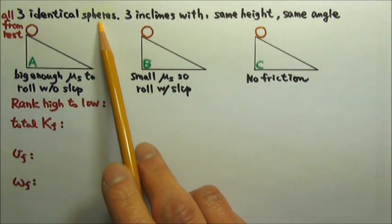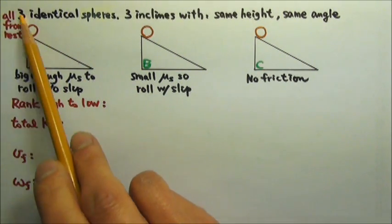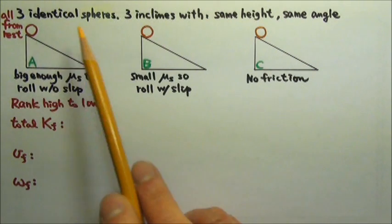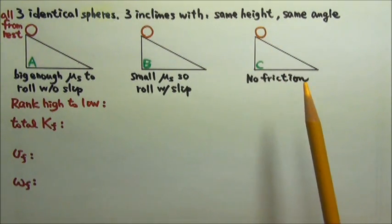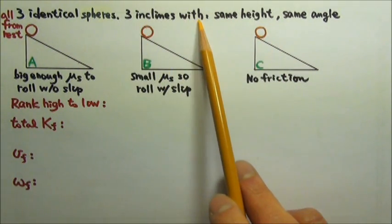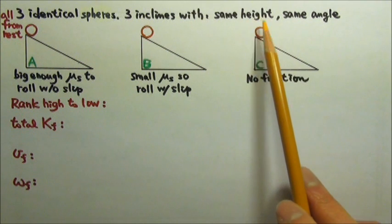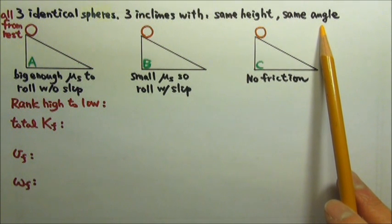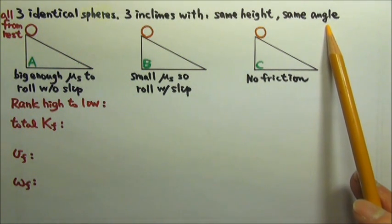Three identical uniform spheres are released from rest at the top of three inclines. The three inclines all have the same height and same angle, but different textured surfaces.